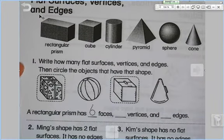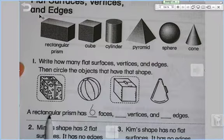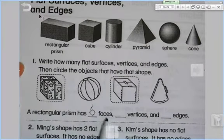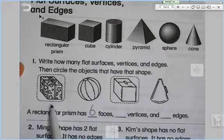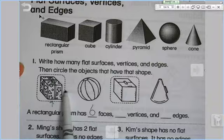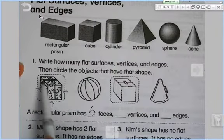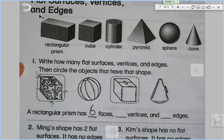It says write how many flat surfaces, vertices, and edges, then circle the objects that have that shape. So here we have a rectangular prism has six faces. Faces are those flat surfaces. Remember, there's one on top, one on the bottom, one on the right, one on the left, one in the front, which means there's one in the back. So there are six. Let's trace six.